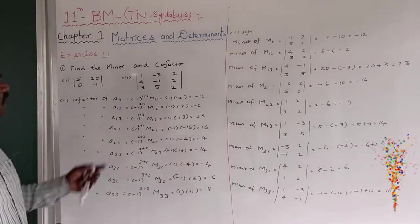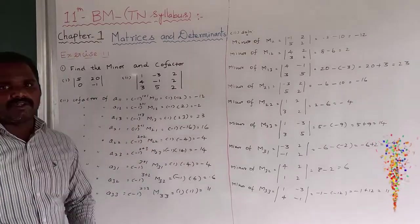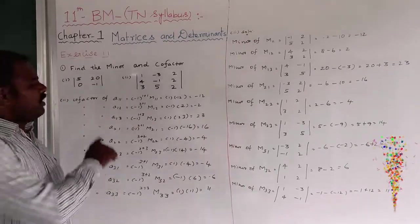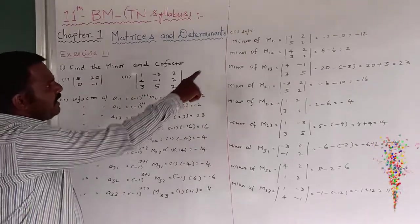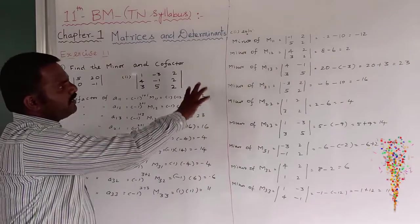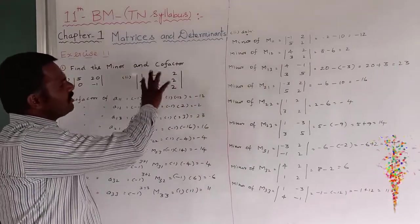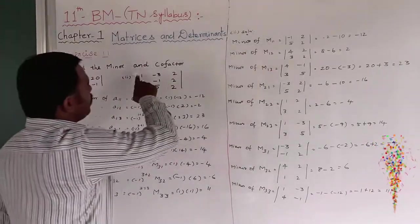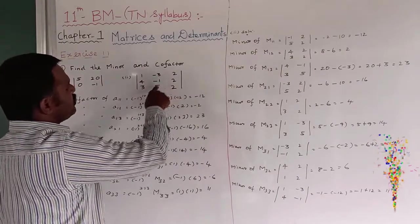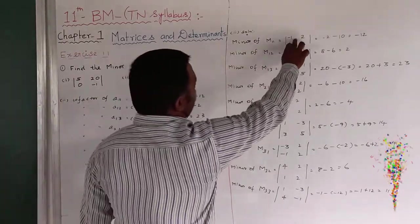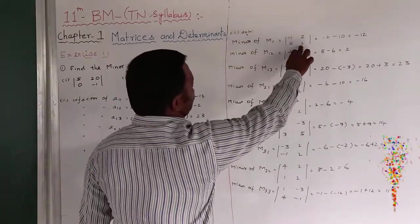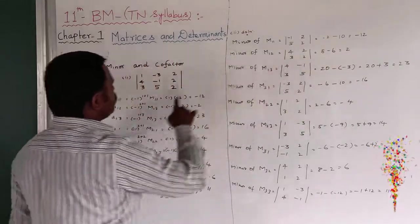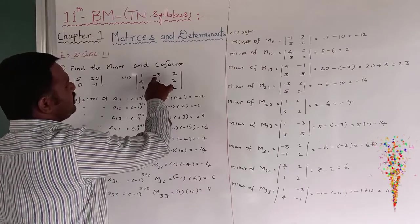This is the cofactor of the second question. We have already found out the cofactor, and we already found out the minor. Now I want to explain the minor calculations. Minor M11 means I want to remove the first row and first column, giving a 2 by 2 matrix. So I want to find the product of those two terms: minus 2 minus 10 equals minus 12.